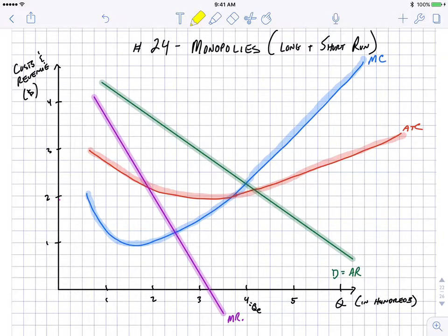This firm sees profit maximization where MC equals MR, which is at this point between the blue and the purple lines on the graph. That's roughly at 250 units of output, 245.